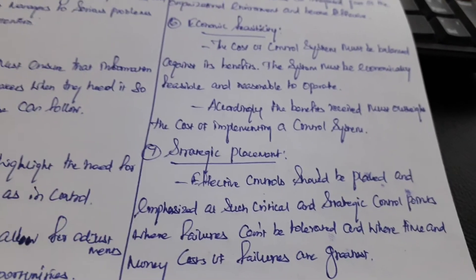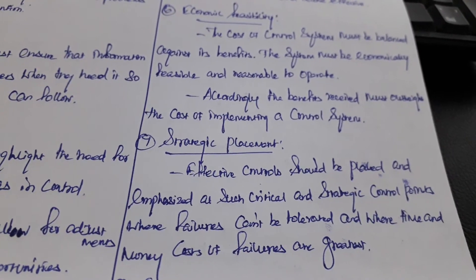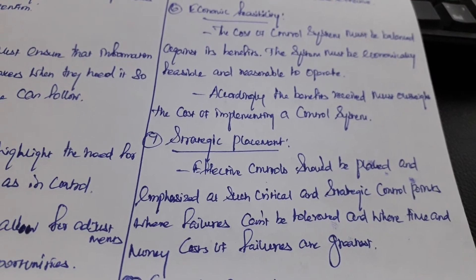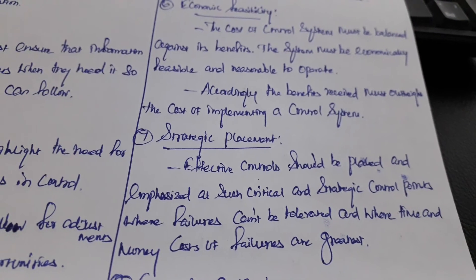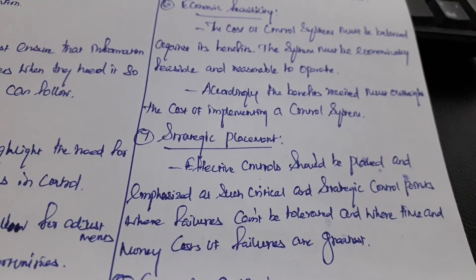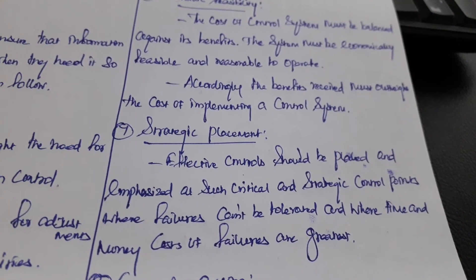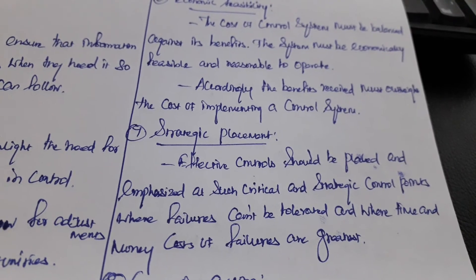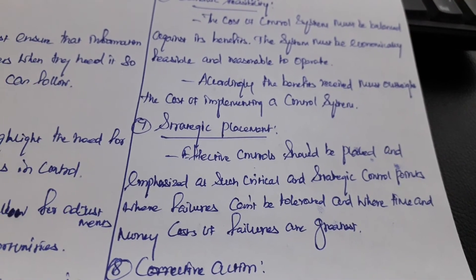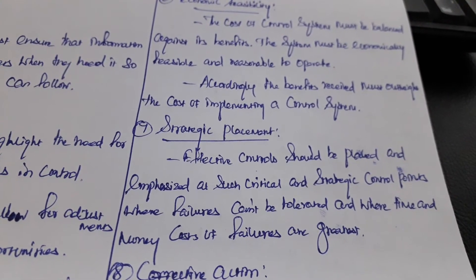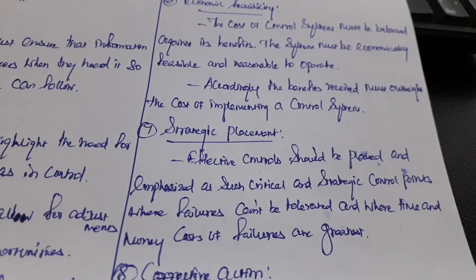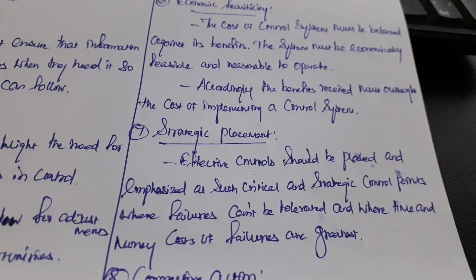Strategic placement: effective controls should be placed and emphasized at such critical strategic control points where failures cannot be tolerated, and where the time and money cost of failures are the greatest.